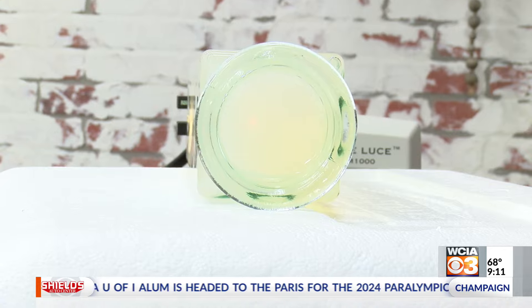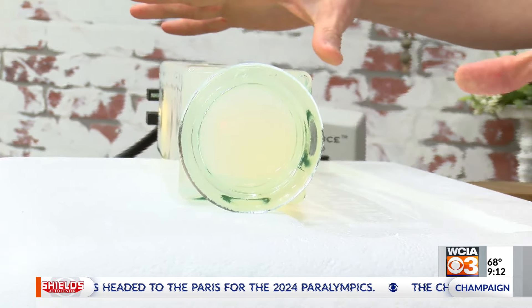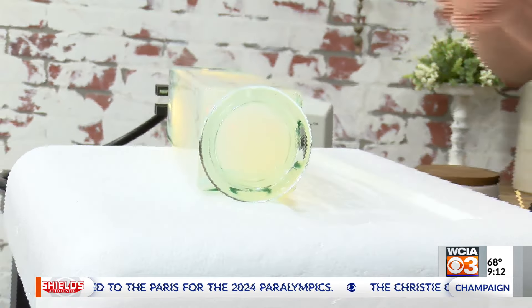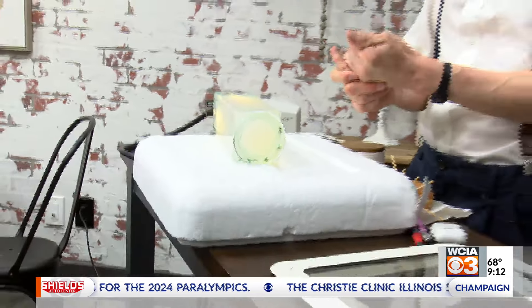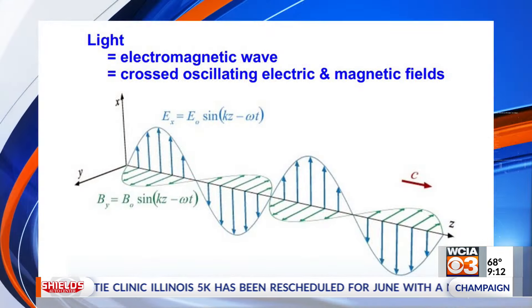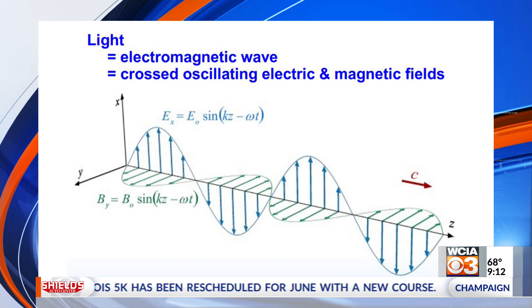So we're going to continue talking about light coming from the sky. To set the stage: light, we know, is an electromagnetic wave. If we have the first graphic here, I've got these electric fields that oscillate — for example, here up and down.